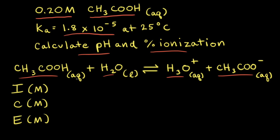Therefore, we need to set up an ICE table so we can figure out the equilibrium concentration of hydronium ion, which will allow us to calculate the pH and the percent ionization. In an ICE table, the I stands for initial concentration, C is for change in concentration, and E is equilibrium concentration.